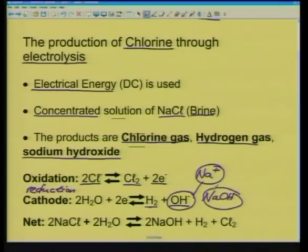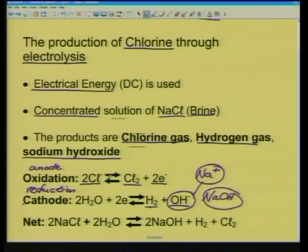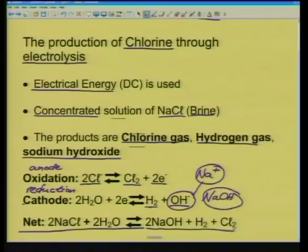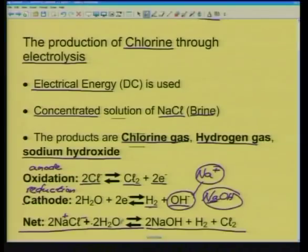This is an oxidation-reduction process. At the anode (oxidation): Cl⁻ ions are oxidized to Cl₂ gas, losing electrons. At the cathode (reduction): water receives the electrons to give hydrogen gas and OH⁻ ions. The Na⁺ ions from NaCl then react with OH⁻ to give sodium hydroxide. The net equation: 2NaCl + 2H₂O → Cl₂ + H₂ + 2NaOH.